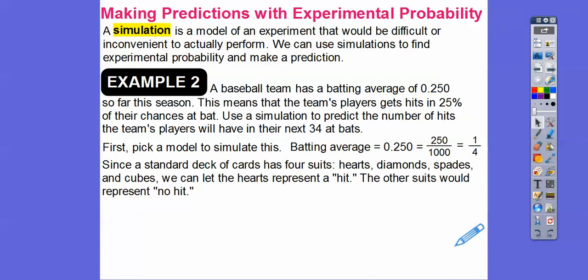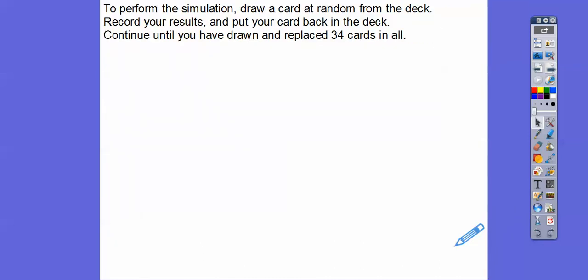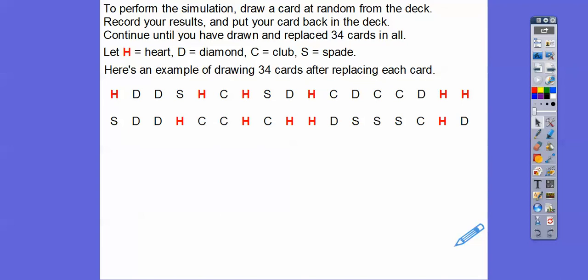A standard deck of cards has four different suits: hearts, diamonds, spades, and clubs. So what we can do is let the hearts represent a hit, and all the other suits would represent no hit. To perform this simulation, we'll draw a card at random from the deck and record the results. Don't forget, we've got to put the card back in the deck so there's still 52 cards in the deck. That would be called independent. We'll talk about it in the next lesson. Then we'll continue doing that 34 times to see how many hits. This would be called a simulation experiment. So we'll let H equal the heart, and D equal the diamond, and C equal the club, and S equal the spade. H for hearts is going to represent hits, and all these are going to represent no hit. And we do this 34 times. Draw a card, put it back in. Draw a card, put it back in. Draw another card. 34 times.